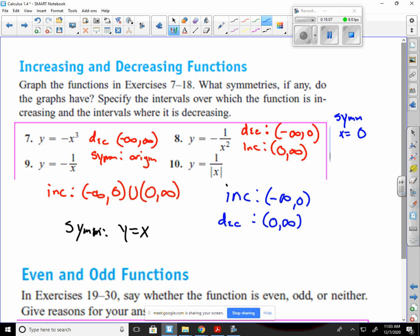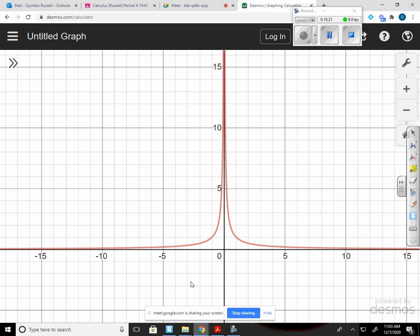So this is increasing from negative infinity to 0 and decreasing from 0 to infinity. And our line of symmetry is x equals 0. If we look at this graph, you can see that on this line, or the y-axis, which is the line x equals 0, if I flip the left side over that line, it would land on the right side. Any questions about those?